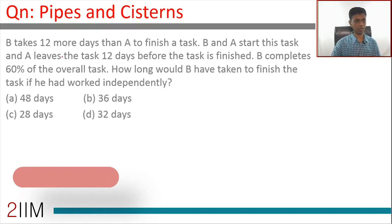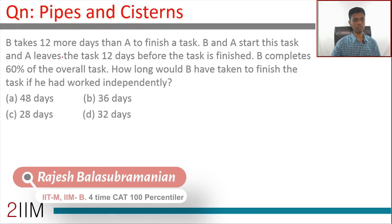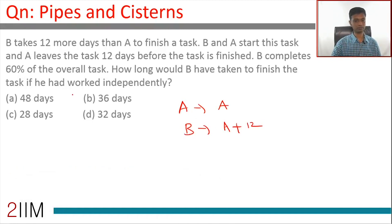Simple question. I'm going to read this and then build from there. B takes 12 more days than A to finish a task. So if A takes a days, B would take a plus 12 days. B and A start this task and A leaves 12 days before the task is finished. B completes 60% of the overall task.